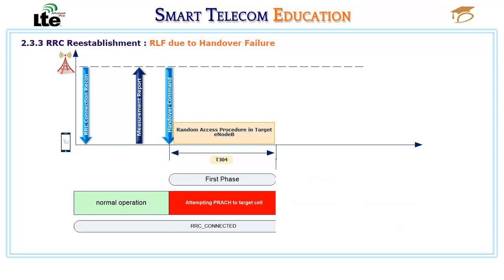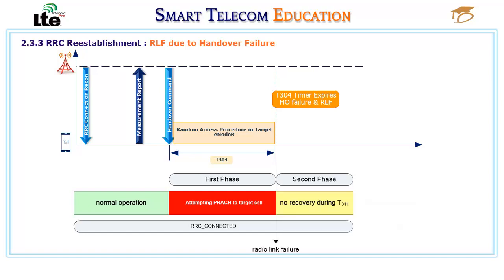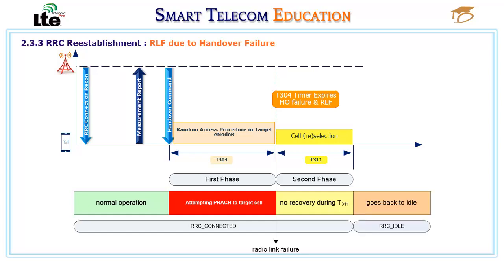If the UE fails to complete the PRACH procedure and the timer T304 expires, then the handover has failed and a radio link failure occurs. In the next step, the UE initiates an RRC reestablishment procedure to recover the radio link by reselecting a suitable cell for reestablishment and starts the T311 timer. If the timer expires and the UE cannot find a suitable cell, then the reestablishment procedure is aborted and the UE goes to idle mode.